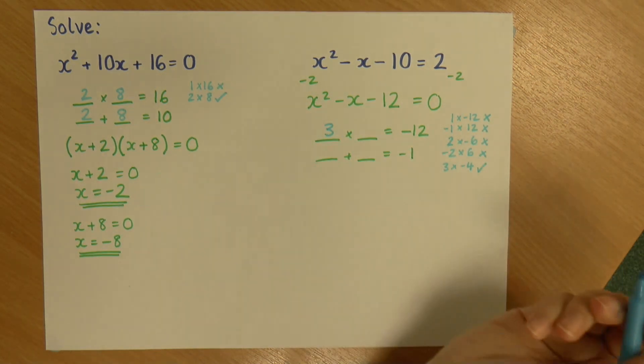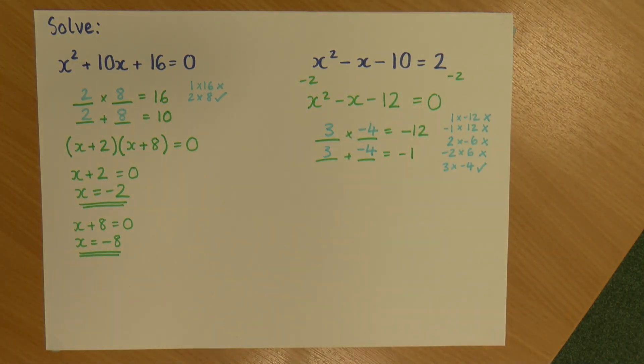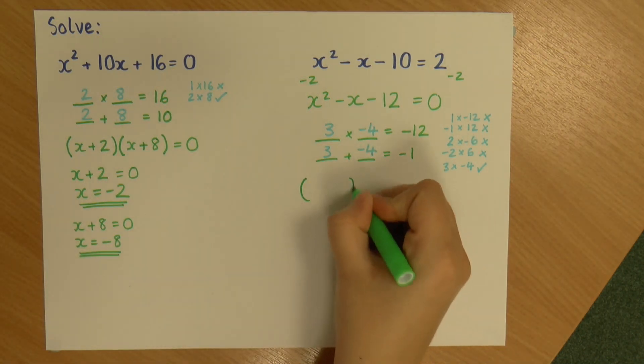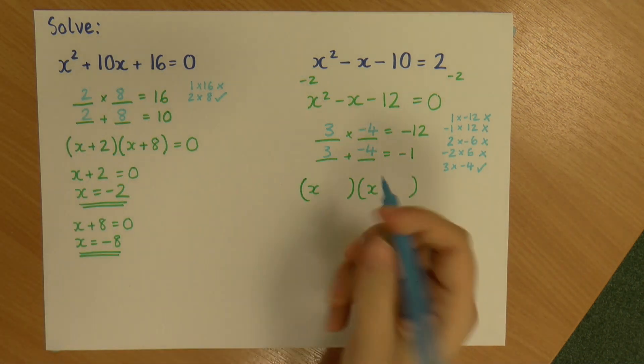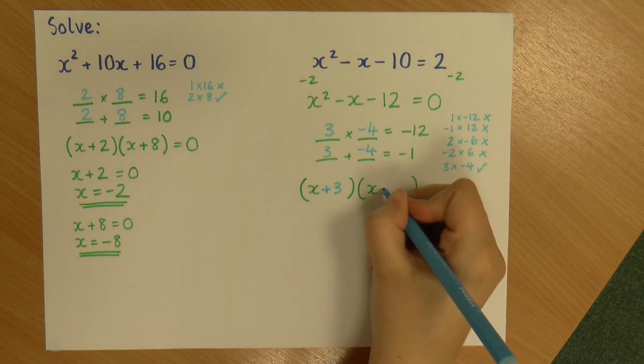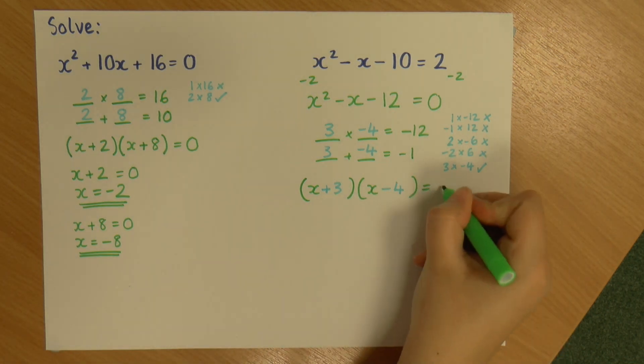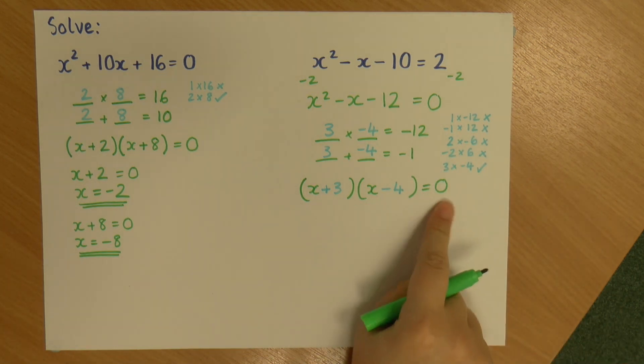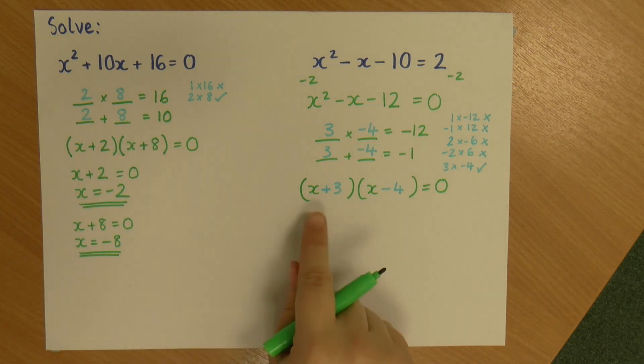So 3 and minus 4 are my two numbers that go in here. So, I'll set up my brackets. So, I've got my plus 3, and I've got my minus 4. Lovely. And then I can just do... Oh, sorry. I forgot my equals 0. So, now I can just do the same thing as I did over here. And make each set of brackets, in turn, equal to 0.